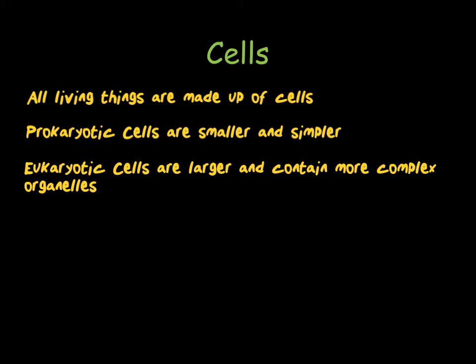Prokaryotes, such as bacteria, are single-celled organisms, whereas eukaryotes tend to be multicellular organisms, such as us or plants. For your GCSE, you need to be able to compare three generalised cells: plant, animal, and bacterial cells.